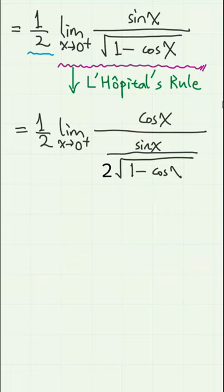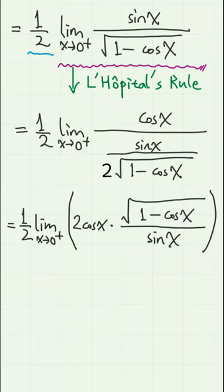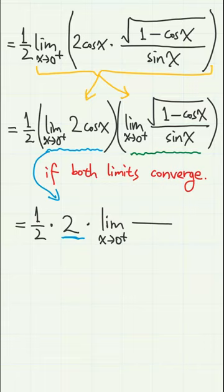And we can write it as 2 cosine x times square root of 1 minus cosine x over sine x. So by splitting again, we have 1 half times 2 times the limit of square root of 1 minus cosine x over sine x, which simplifies to this.